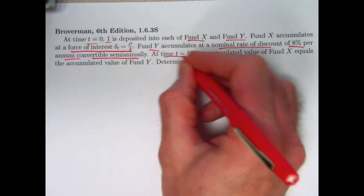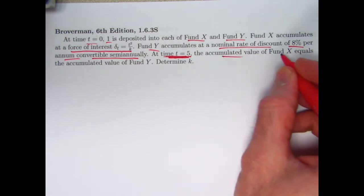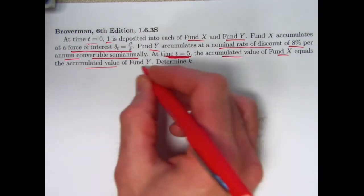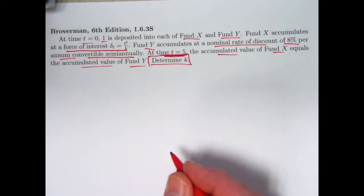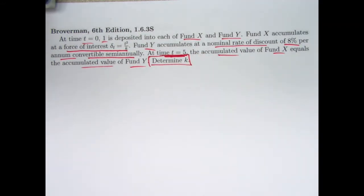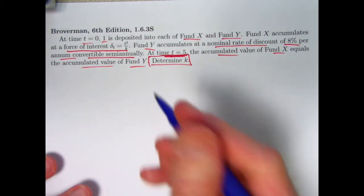At a certain moment in time, just that moment in time, the accumulated value of fund x equals the accumulated value of fund y. Determine k, this unknown parameter in this force of interest function. All right, kind of just like in the last video, I'm going to solve the problem in the quickest way possible first, and then I will continue talking a little bit more about what the force of interest is to remind you of that.